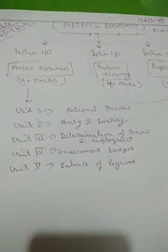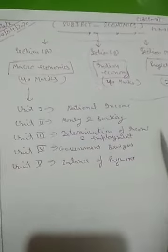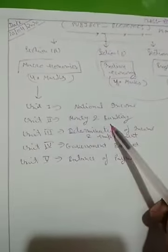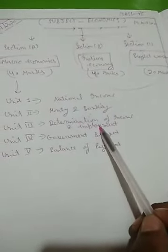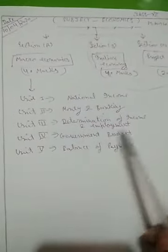There are five units of Macroeconomics. First unit: National Income. Second unit: Money and Banking. Third unit: Determination of Income and Employment, very important unit. Unit 4: Government Budget. And Unit 5: Balance of Payment.